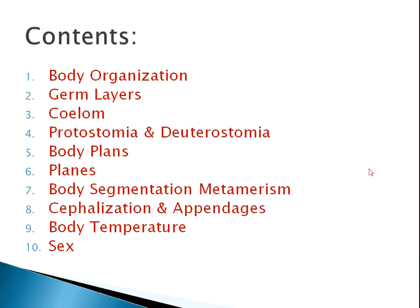Body temperature — that is poikilothermic and homeothermic — and sex, that is monoecious, dioecious, unisexual, bisexual, etc. In the coming few videos we are going to study this in detail. So let's start with body organization.